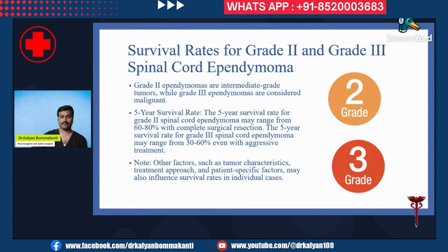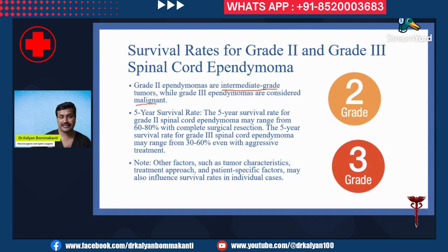Grade two ependymomas are intermediate grade tumors, while grade three ependymomas are considered malignant — they are cancerous and have the worst outcome. The five-year survival rate for grade two spinal cord ependymomas may range from 60 to 80 percent with complete surgical resection. The five-year survival rate for grade three spinal cord ependymomas may range from 30 to 60 percent even with aggressive treatment.